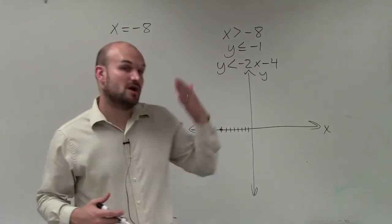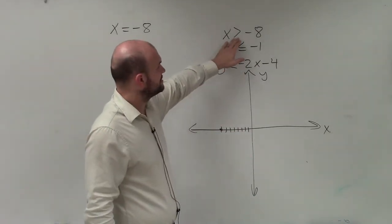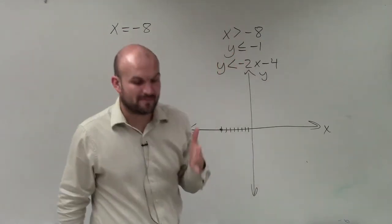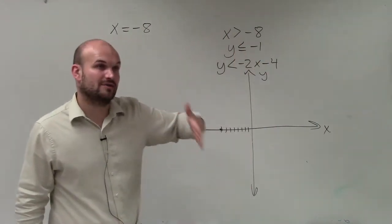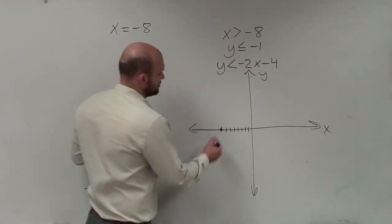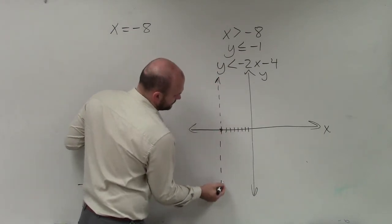So therefore, that's going to be my line. But before I just draw a nice line like an equation, I go back over to my inequality. And I need to be able to make sure, is my boundary line going to be a part of my solution or not? Since x is greater than negative 8, not greater than or equal to, it's going to be dashed, meaning it's not going to be a part of my solution.